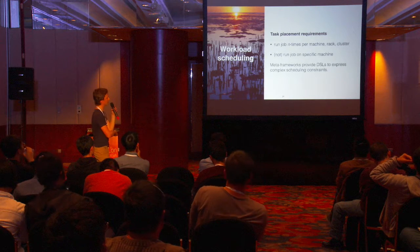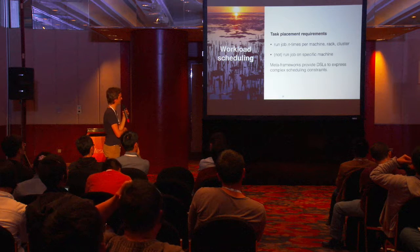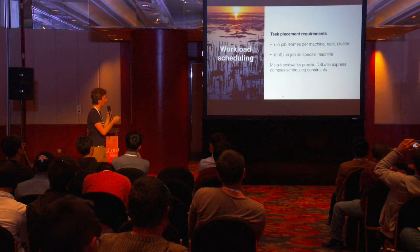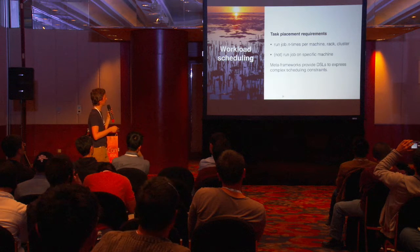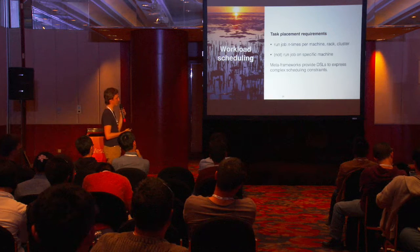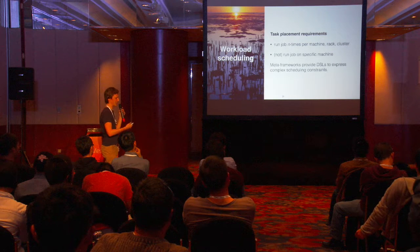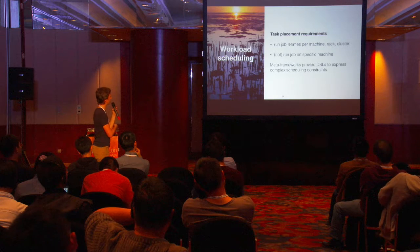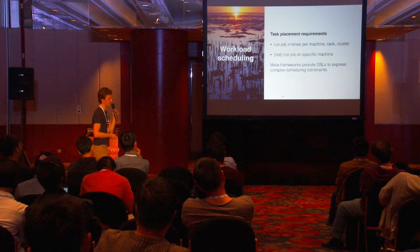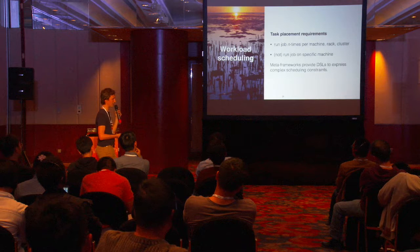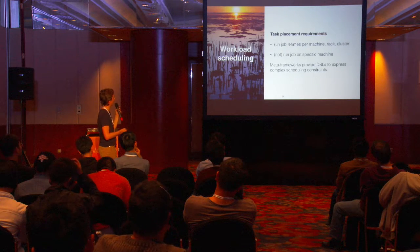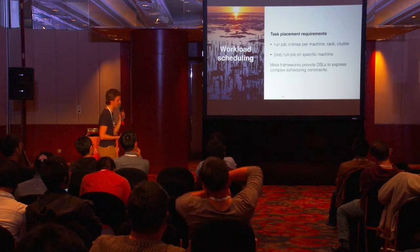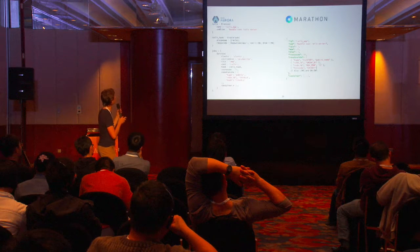Now we know how to run tasks that don't crash too early and how to find them. Let's look at something slightly more complicated. Since Mesos offers resources to frameworks and frameworks can schedule on their own, we have some freedom in how to run tasks. We might have constraints on how tasks are placed — for example, we might want to run some job multiple times per rack, or n times in a cluster, or ensure a task doesn't run on a rack where the power might fail. These are constraints on what kind of offers a framework would accept.